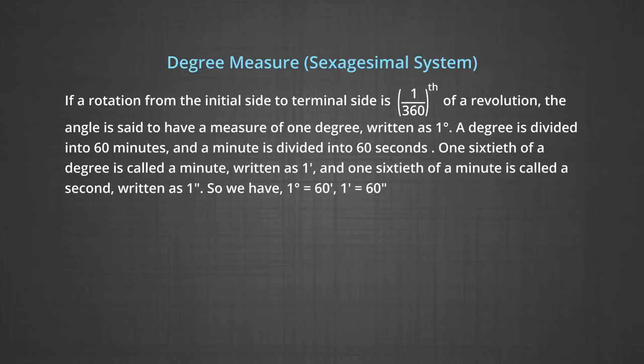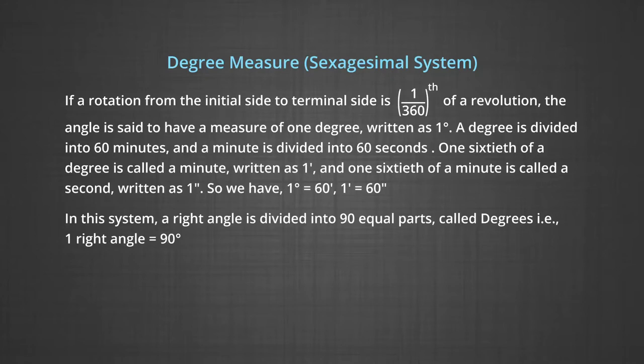So, we have 1 degree is equal to 60 minutes and 1 minute is equal to 60 seconds. In this system a right angle is divided into 90 equal parts called degrees. That is, one right angle is equal to 90 degrees.